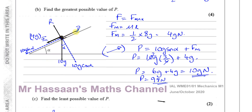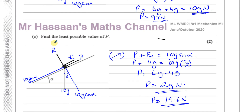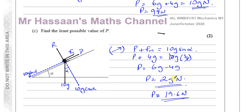So you have two cases. The maximum P is when it's about to slide up the plane — F_max acts downwards and it's still in equilibrium. The minimum P is when it's just about to slide down — friction acts up to help stop it. Upward forces equal downward forces in both cases. You can see this value is less than that value, which makes sense. There's the answer to question number three.